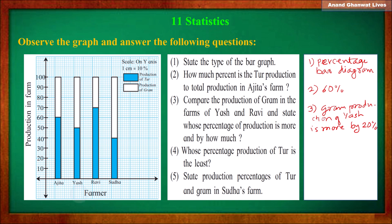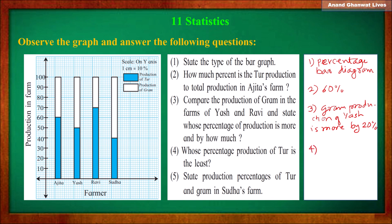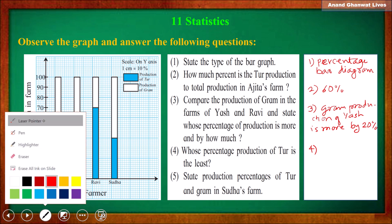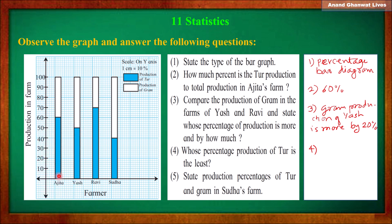Question four: whose percentage production of tur is the least? Ajita's tur production is 60%. Sudha's tur production is 50%. So whose tur production is least? The answer is Sudha's tur production is the least.